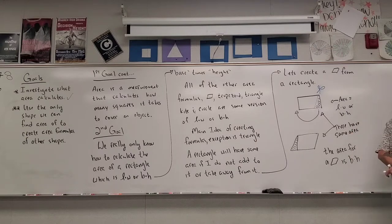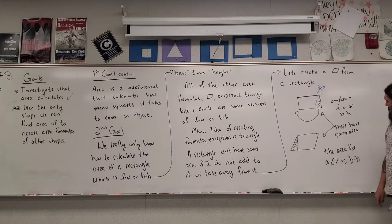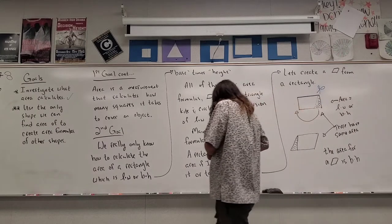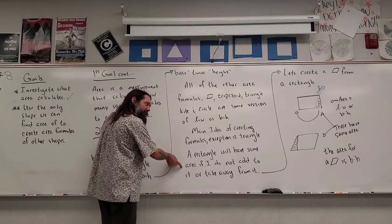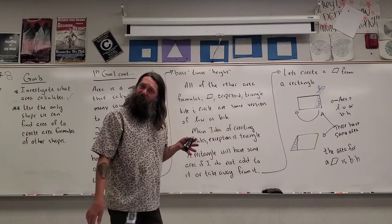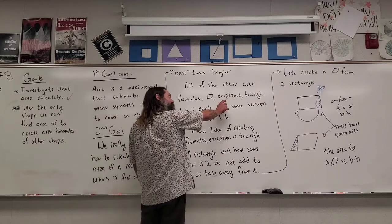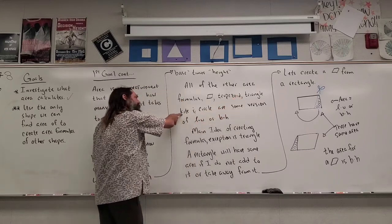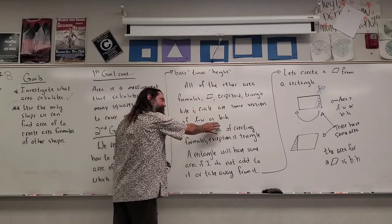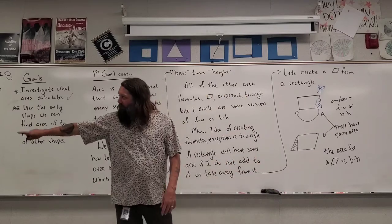Since the base didn't change and the height didn't change — the only thing that changed was I cut out a triangle and pasted it on the other side — the area is still base times height. We don't say length times width for a parallelogram, because 'width' is implied for a rectangle. The area for a parallelogram is base times height. I can make any parallelogram from a rectangle, so they share the same formula.